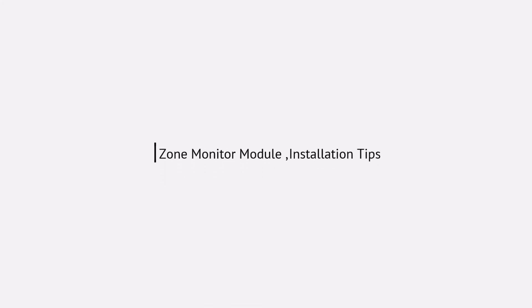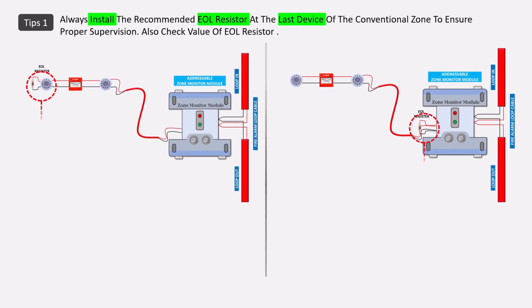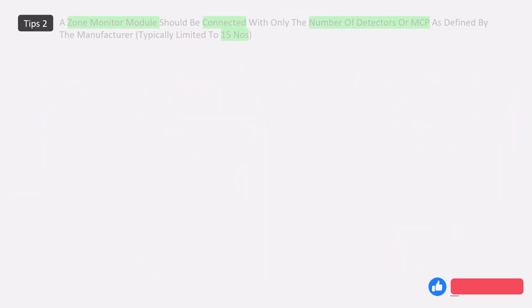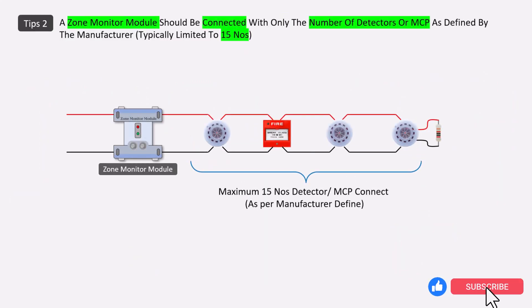When installing the zone monitor module, pay attention to these tips. First, always install the end-of-line resistor in the last device of the zone — this allows proper monitoring of the zone circuit and fault detection. Second, check that the end-of-line resistor of the proper value is installed. Third, connect only as many detectors or MCPs as defined by the manufacturer — most zone monitor modules support a maximum of 15 detectors or MCPs.